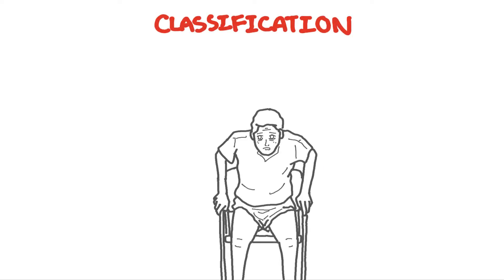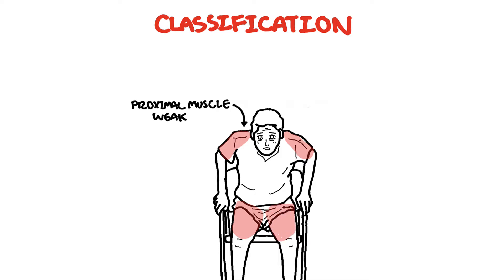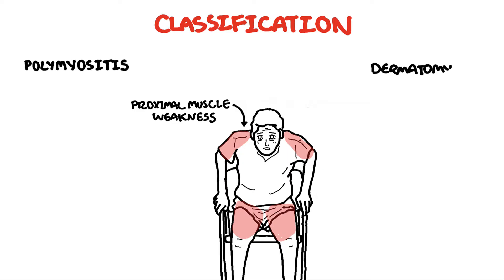Let us now talk about the six different types of inflammatory myopathies. Each of them present with proximal muscle weakness, typically involving the shoulders and the thighs, however each has its own unique features. The muscle weakness itself usually presents with a history of difficulty getting up from a chair without support and difficulty climbing stairs. The historical classification includes polymyositis and dermatomyositis.